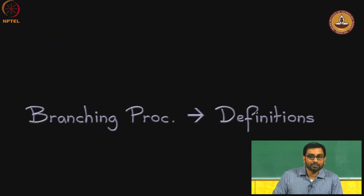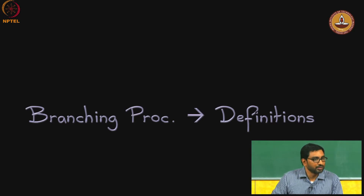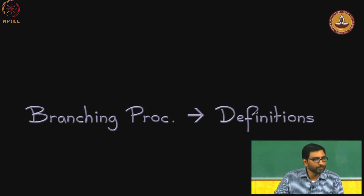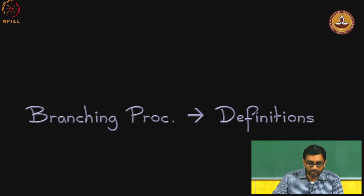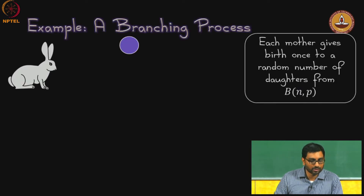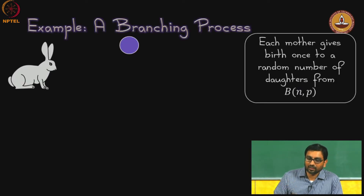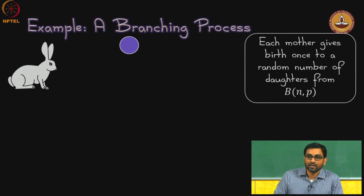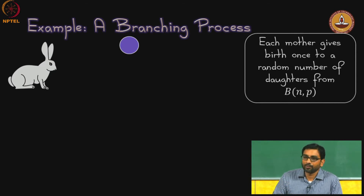Let me motivate that by looking at what is called a branching process. It is a very simple but very useful process that shows up a lot, and I will motivate this in the context of trying to understand the population of a species.